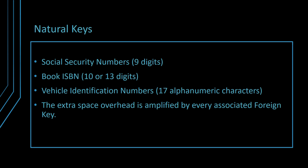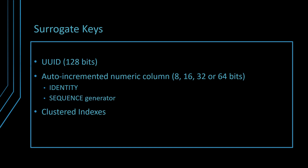So the extra space issue is amplified by child tables. The alternative is to use a surrogate key, like a UUID or an auto-incremented numeric sequence. The UUID suffers from the same issue as natural keys — taking 128 bits, it's quite large. On the other hand, an auto-incremented numeric column can be much more compact.